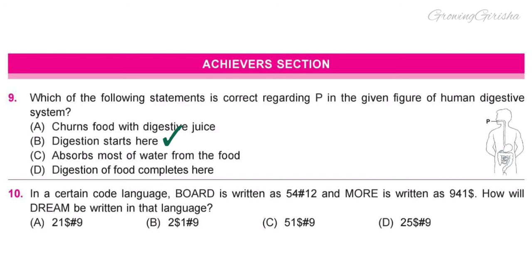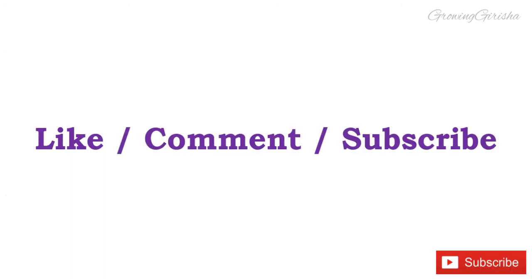Question 10. In a certain code language, BOARD is written as 5, 4, #, 1, 2 and MORE is written as 9, 4, 1, $. How will DREAM be written in that language? Option A: 2, 1, $, #, 9.